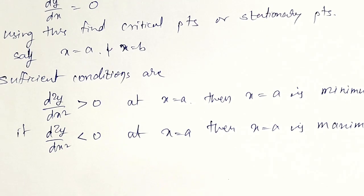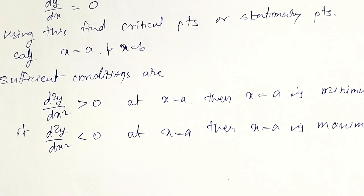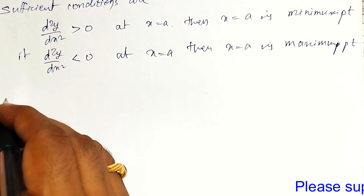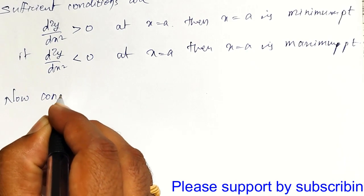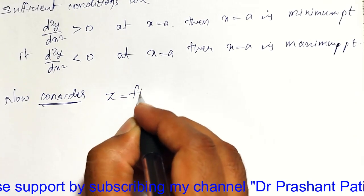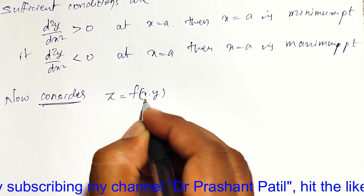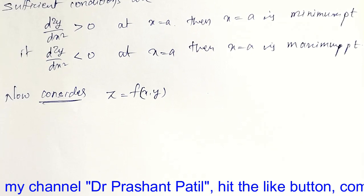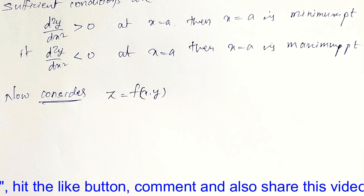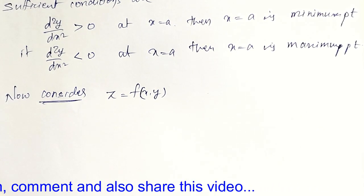This condition was already discussed for single variable. Now we have to extend it for functions of two variables. Consider z is equal to f of x y. Geometrically, z equal to f of x y represents a surface in three dimensions — with an x-axis, y-axis, and z-axis.